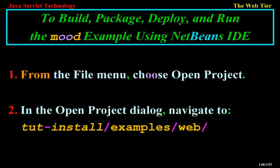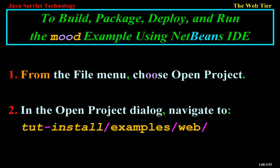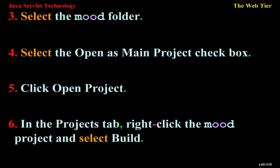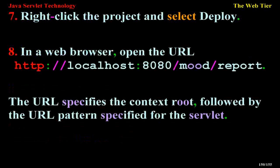To build, package, deploy, and run the mood example using NetBeans IDE: from the File menu, choose Open Project. In the Open Project dialog, navigate to tut-install/examples/web and select the mood folder. Select the Open as Main Project checkbox. Click Open Project. In the Projects tab, right-click the mood project and select Build. Right-click the project and select Deploy. In a web browser, open the URL http://localhost:8080/mood/report. The URL specifies the context root, followed by the URL pattern specified for the servlet.